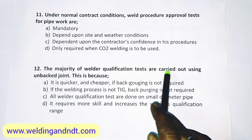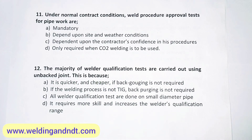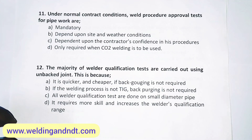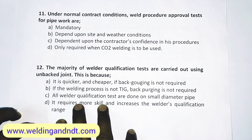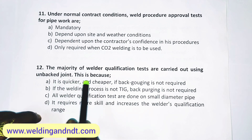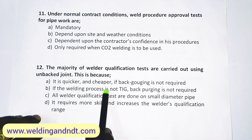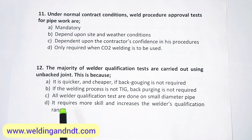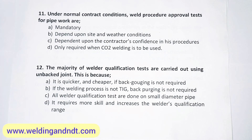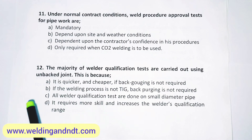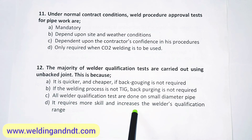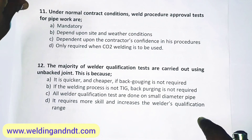Question number 12: The majority of welder qualification tests are carried out using an unbacked joint. This is because it requires more skill and increases the welder qualification range — answer D. With backing it is very easy, but using an unbacked joint always requires more skill and it increases the welder qualification range. So D is the answer.